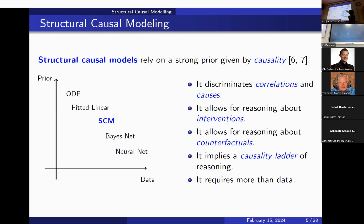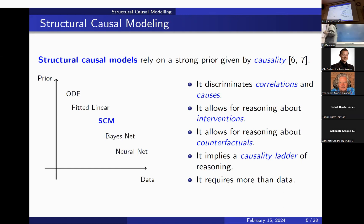We can also move beyond interventions and reason about counterfactuals. Structural causal models give us a formal way to reason about alternative realities — to ask questions like 'what would have happened if we had done something different?' Studying the system in terms of statistical correlations, interventions, and counterfactuals forms what is normally called the ladder of causality, reflecting that these three types of questions require substantially different formal machinery.